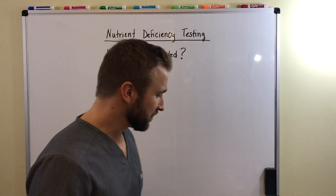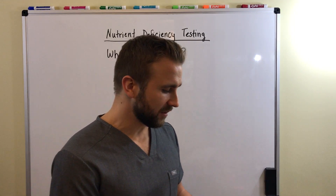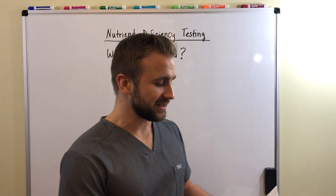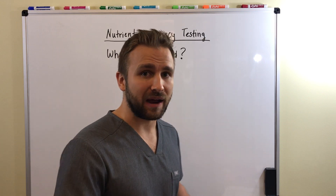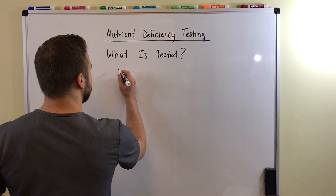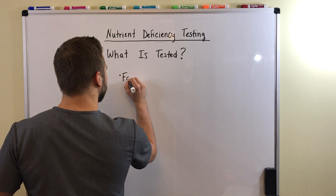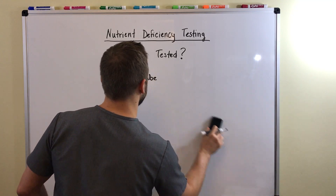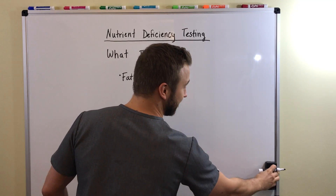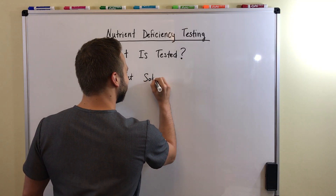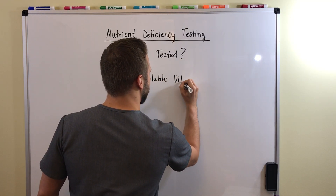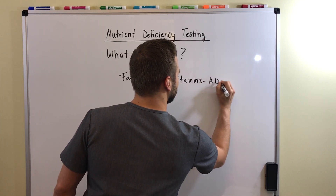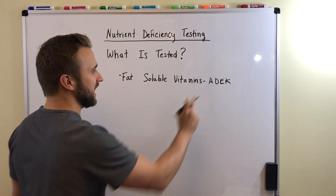I have a sample report here of some of the nutrients that we test. On the sample report, we have things like vitamin A — a fat-soluble vitamin. So we look at fat-soluble vitamins: A, D, E, and K.